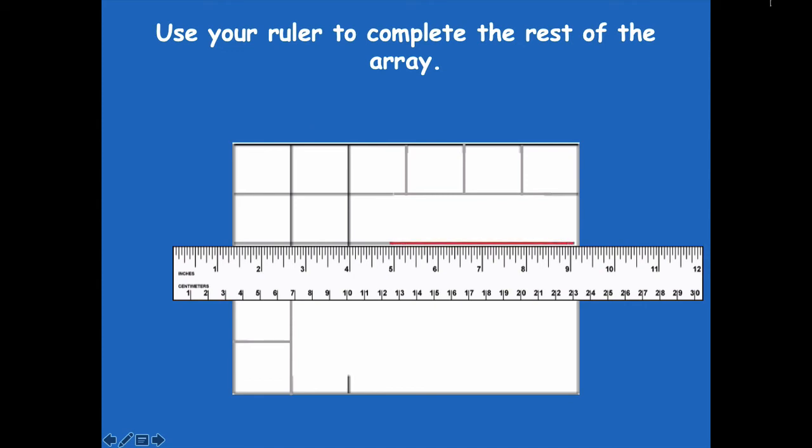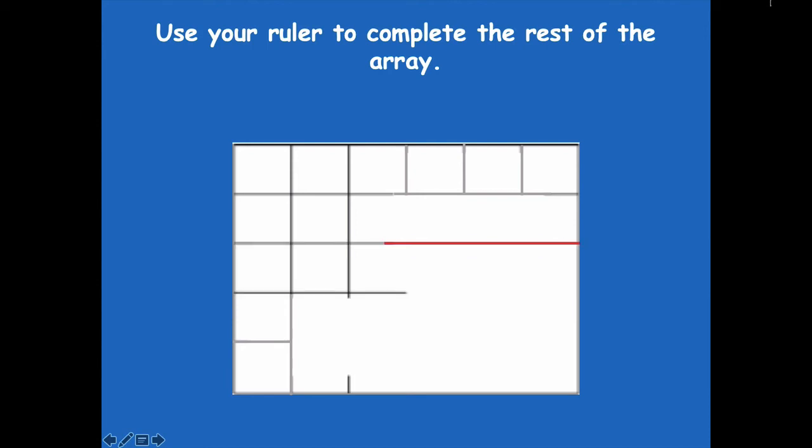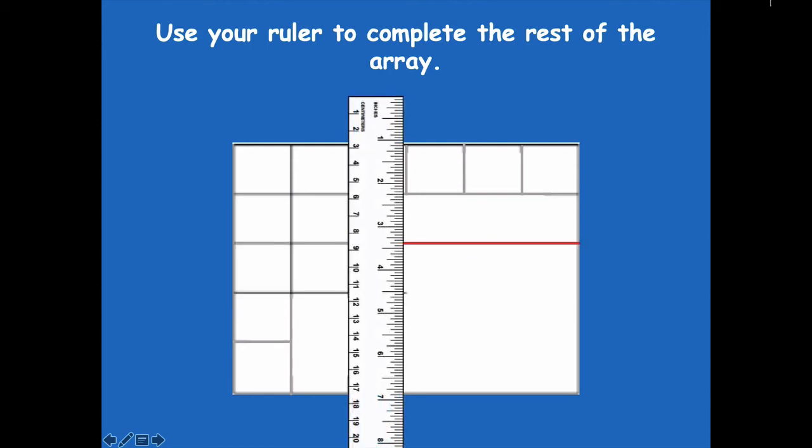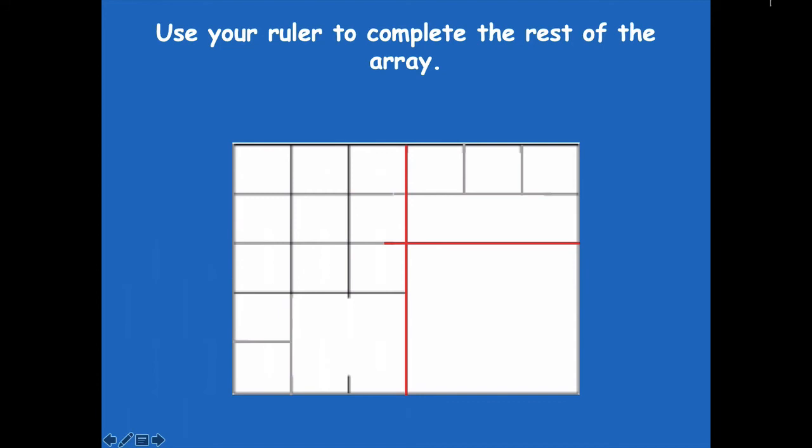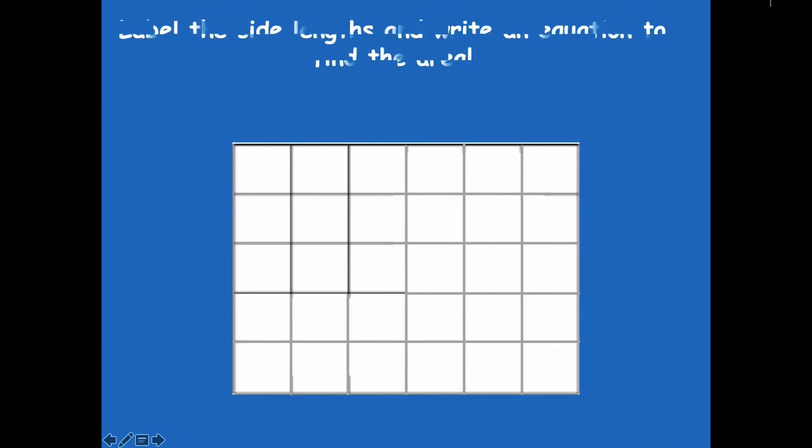Then you can do the opposite for vertical rows. Find one that you already know and line it up and go straight across. Okay, all right, so go ahead and finish drawing in the rest of the array and then click play when you're ready for the next step. All right friends, so here's what mine looks like. Does yours look the same? All right, awesome.